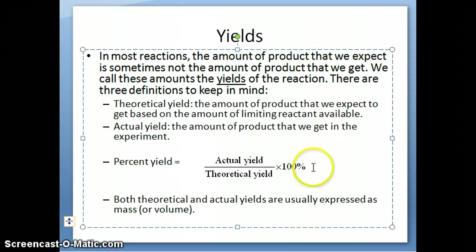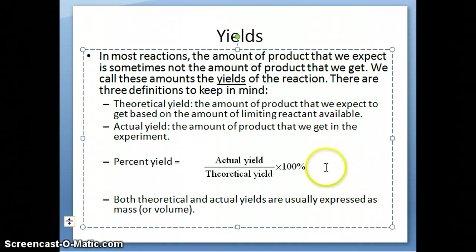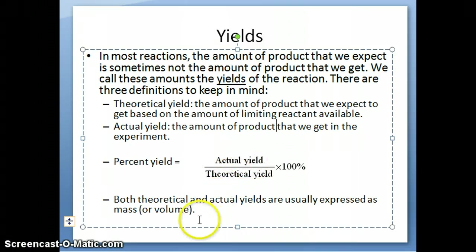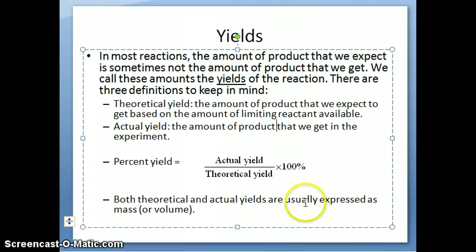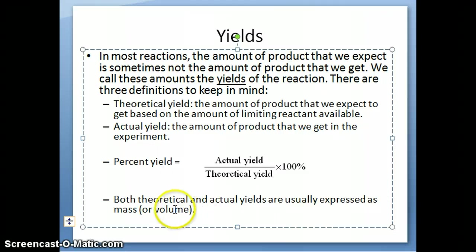Ideally you want the percent yield to be 100 percent, but if it's not, that means there are some issues with your experiment. Theoretical and actual yields are usually expressed in units of mass, but you can also see them expressed as volumes if we're talking about liquids.